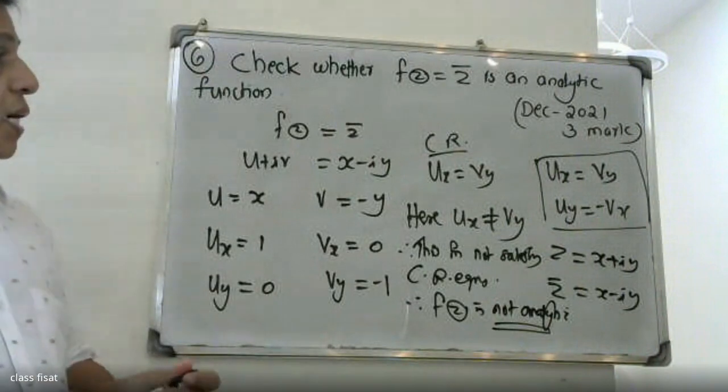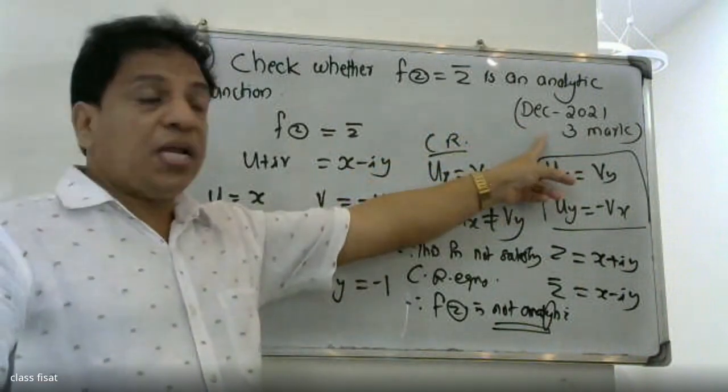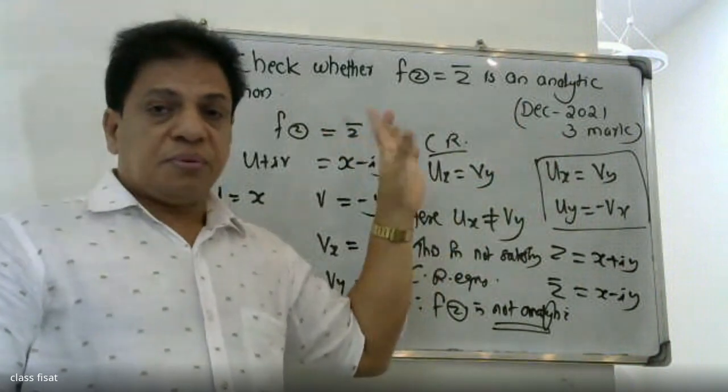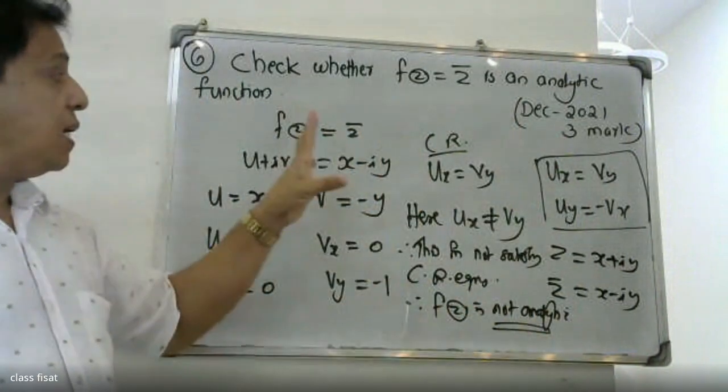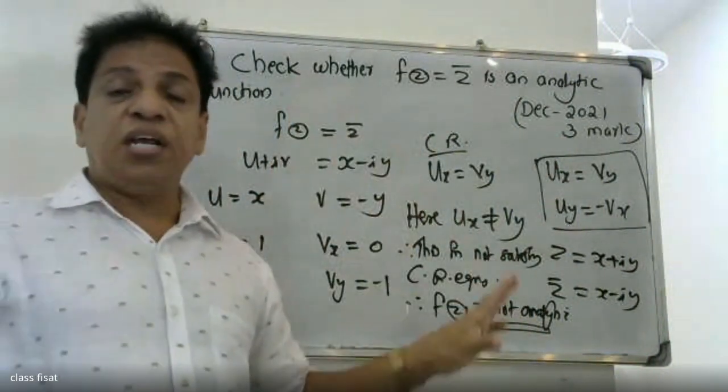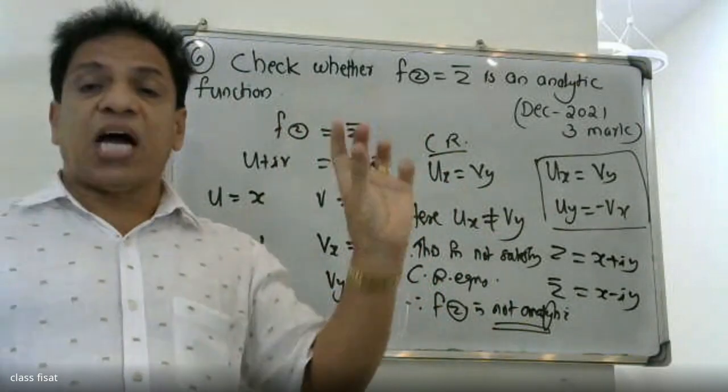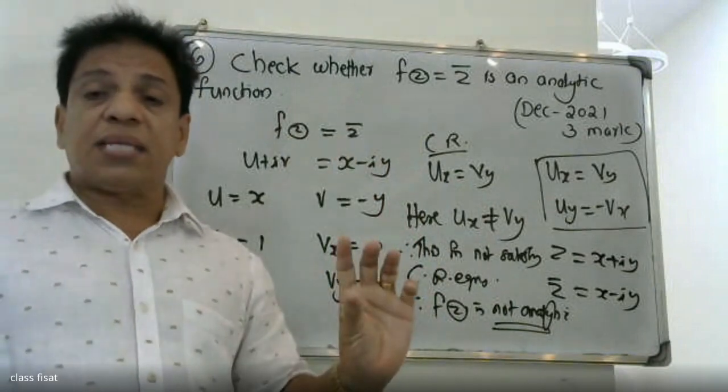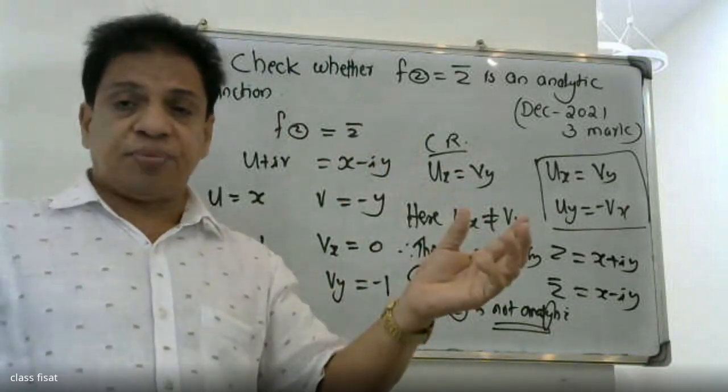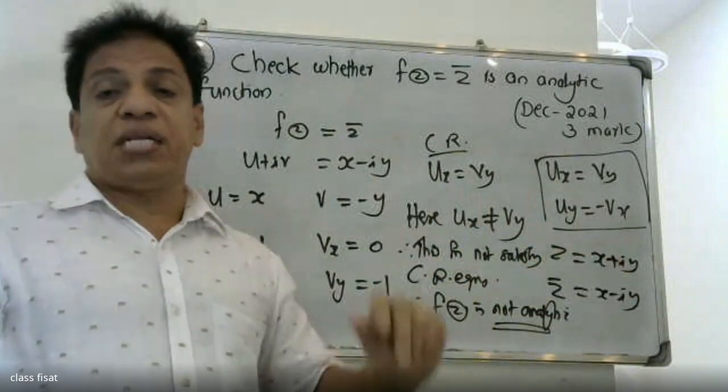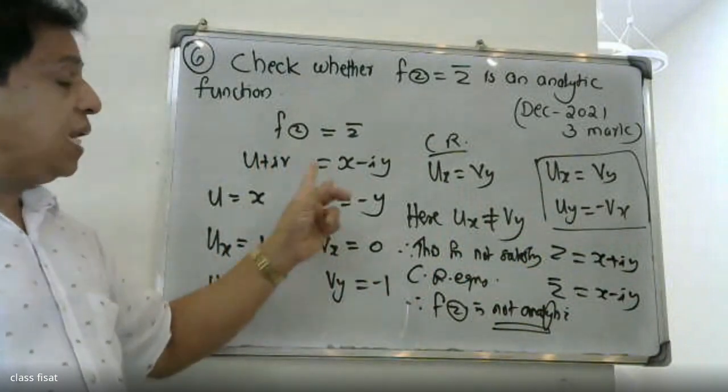Let me review: this is a simple problem where we check if the function f of z equal to z bar is analytic. f of z equals u plus iv, and z bar equals x minus iy. Taking the real and imaginary parts, u equals x and v equals minus y.